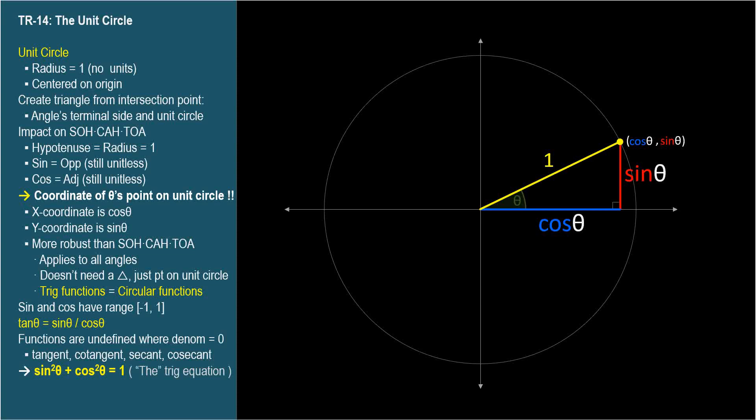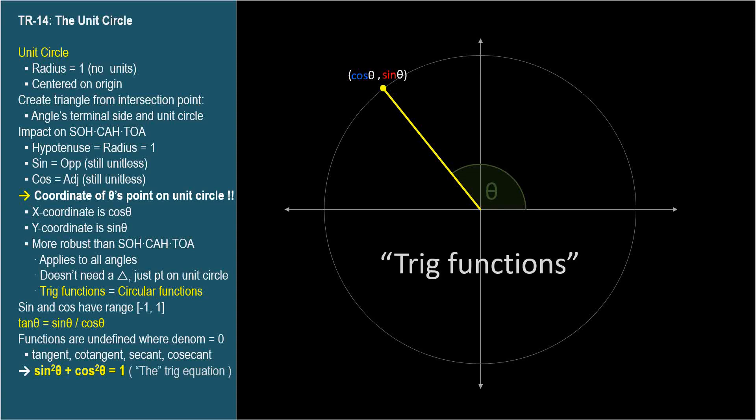This method works for all angles. We cannot construct a right triangle with an obtuse angle. But when using the points on a unit circle, we don't need a triangle at all. So I'll begin referring to the trig ratios as trig functions, because we can now consider them functions of any angle, not just the ratios for right triangles in quadrant 1. And sometimes the trigonometric functions are called circular functions for this very reason.